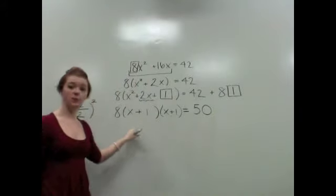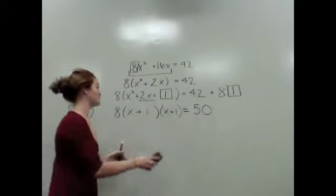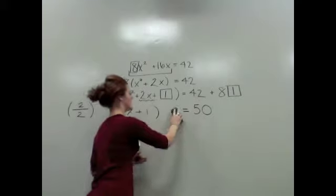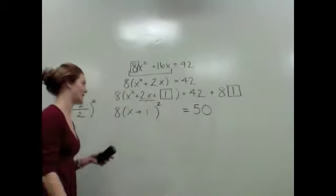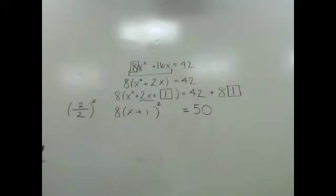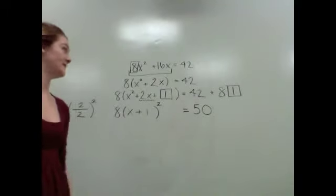But why would I want to write this twice? It appears twice. So essentially, it's just this term squared. So I have 8 times the quantity (x + 1)² equals 50.